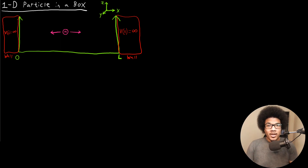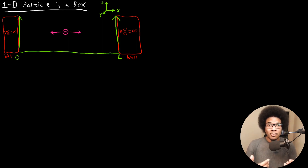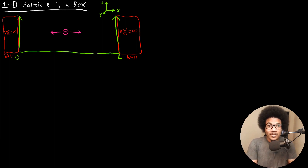In this video, we're going to introduce the one-dimensional particle-in-a-box problem. The first four units in this class were dedicated specifically to building up Schrödinger's equation, learning the properties of the equation, and how we can actually utilize it to calculate properties for quantum systems. Now we're going to spend the next few units actually introducing some quantum systems and solving Schrödinger's equation for those cases.